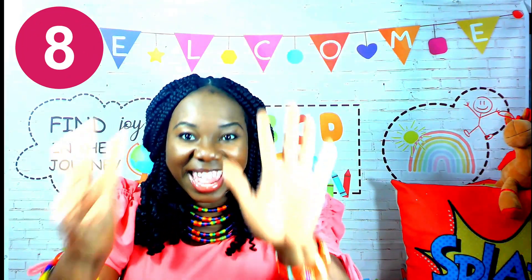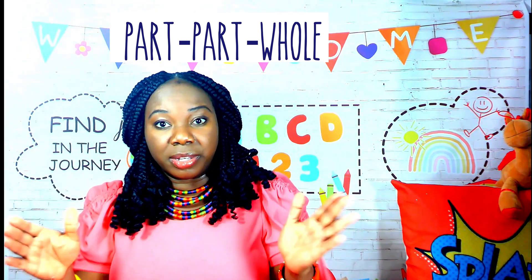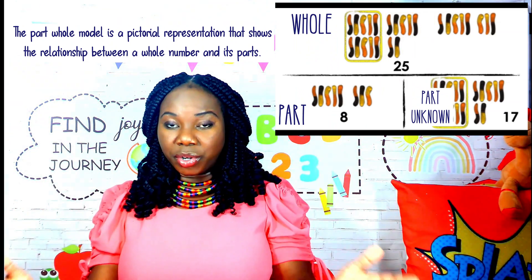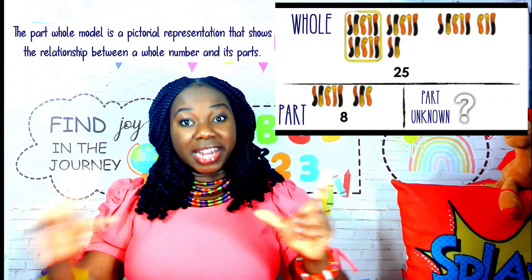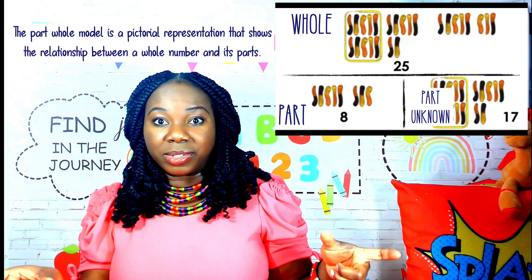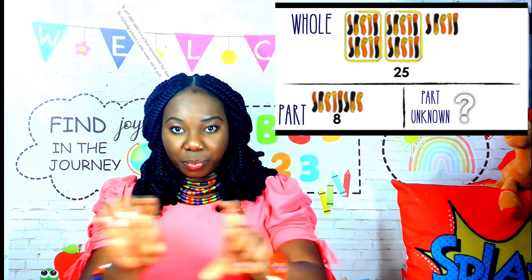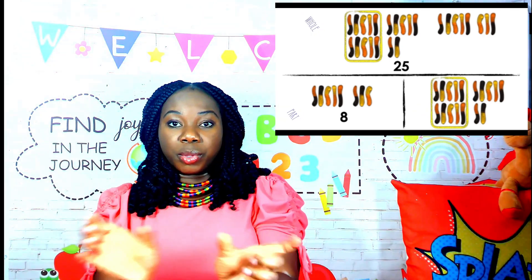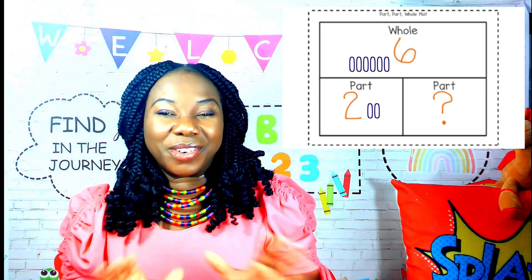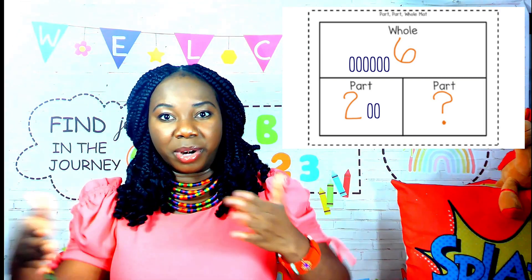Addition strategy number eight: part, part, whole. The part-part-whole model in math is a simple pictorial representation of a number that helps elementary learners visually see the relationship and connection between numbers. A horizontal bar shows the whole number or whole amount, and underneath it, an identical bar is split into parts to show the breakup of the whole. It simply shows that two parts make up the whole, and there are only two types of part-part-whole questions: finding the whole or finding the unknown part.